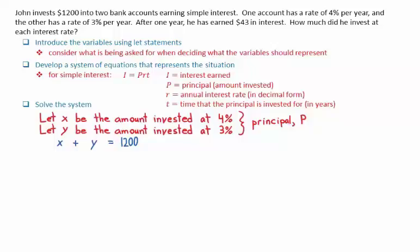The other equation involves the total interest. 0.04x is the total interest from the 4% account and 0.03y, the total interest from the 3% account. Note that the 4% and 3% had to be converted into decimal form.